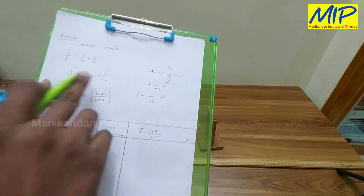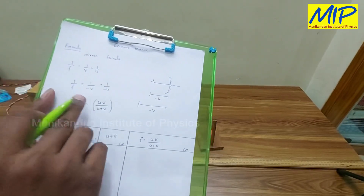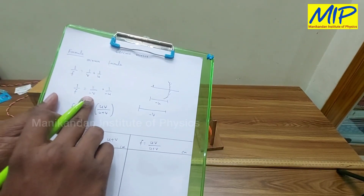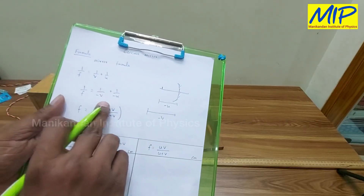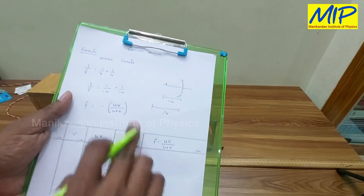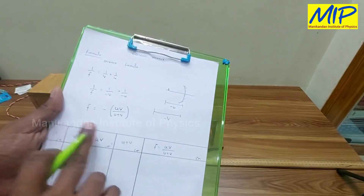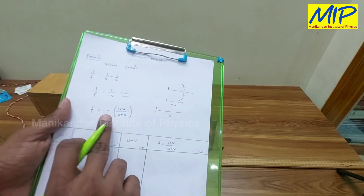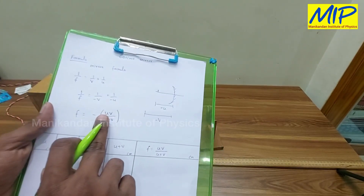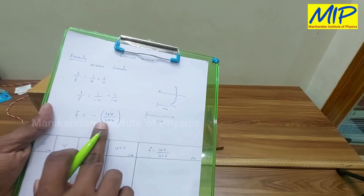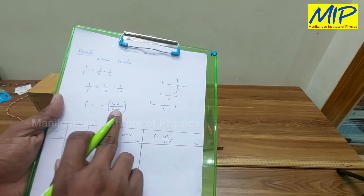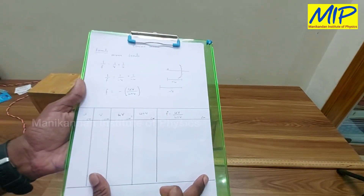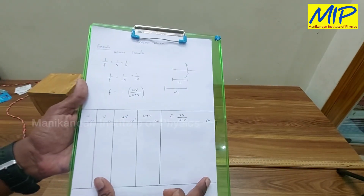Substituting these two negative values into the formula, I get: 1/f = 1/(−v) + 1/(−u). Simplifying this, the focal length of the given concave mirror is: f = −uv / (u + v).